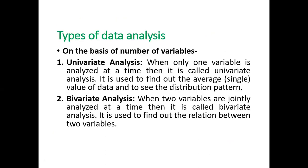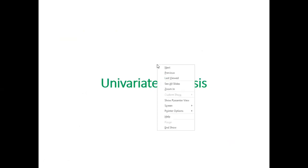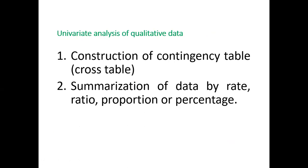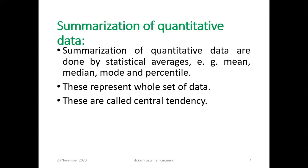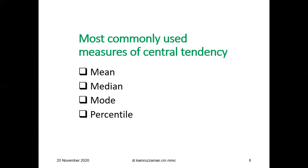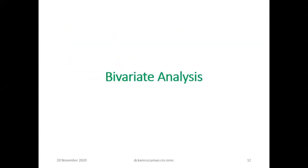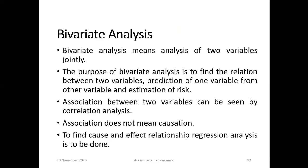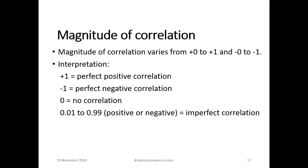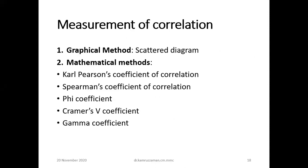In summary, data analysis is classified as univariate, bivariate, or multivariate analysis. Univariate analysis of qualitative data includes contingency table and rate, ratio, proportion, percentage; for quantitative data: mean, median, mode, percentile, central tendency, and dispersion measures. Bivariate analysis covers types of correlation, correlation measurement using scatter diagram, Karl Pearson's coefficient, and Spearman's coefficient correlation.